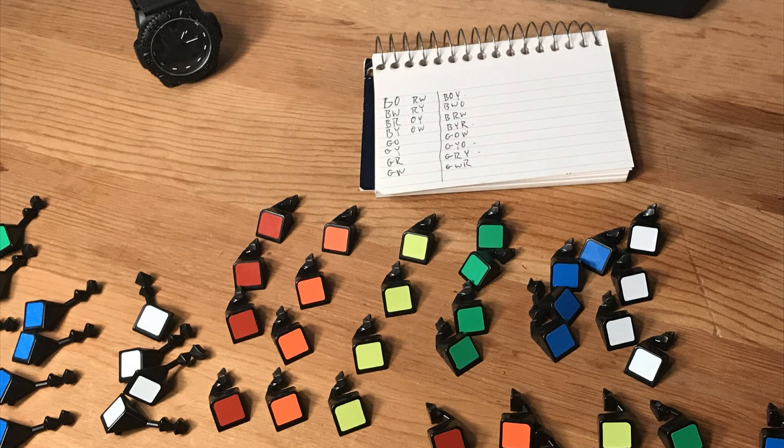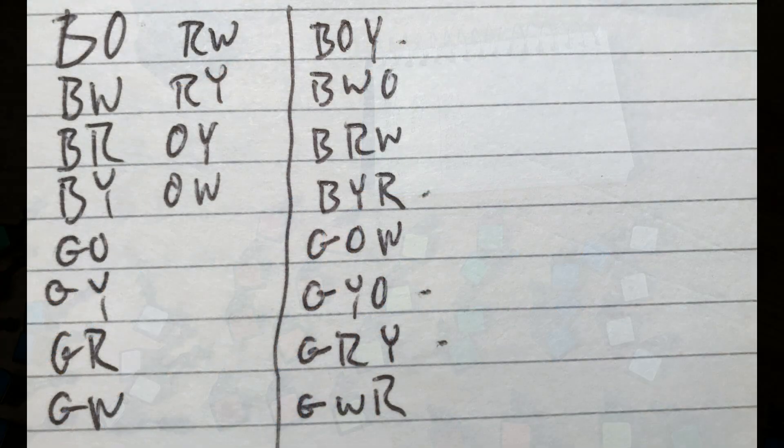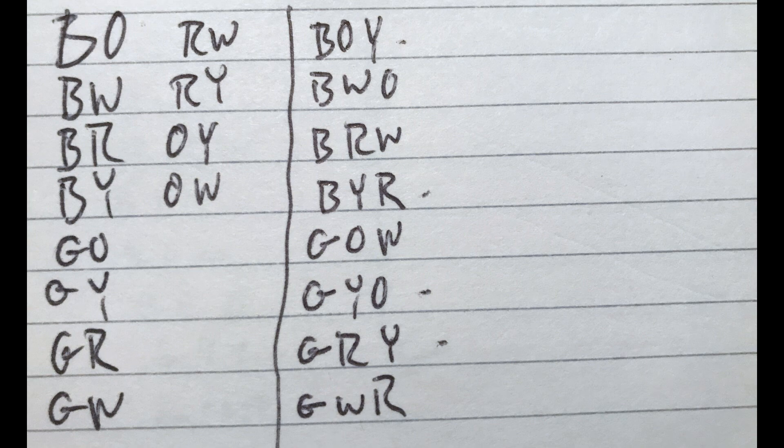Now it's time to reassemble the individual parts that make up the cubey pieces. I keep this card handy. This shows the color arrangement of the individual cubey pieces. The left column are the edge pieces. So you see B-O, B-W, B-R, B-Y, etc. That's blue, orange, blue, white, blue, red, blue, yellow, etc. The right column are the corner pieces listed in clockwise order. So B-O-Y, blue, orange, yellow, blue, white, orange, etc. Those are the arrangements of colors on the corners. So I keep this handy. It just helps me make the cube or rebuild the cube a lot quicker than looking at one or trying to rely on my memory.